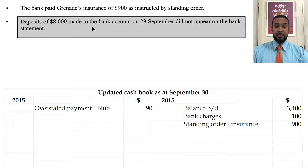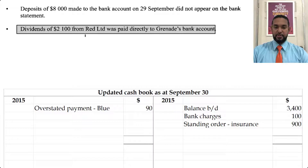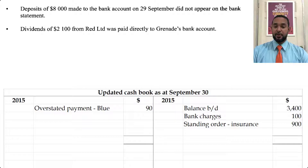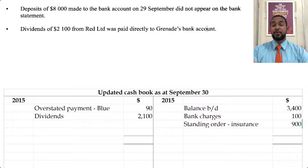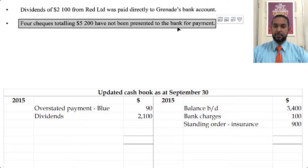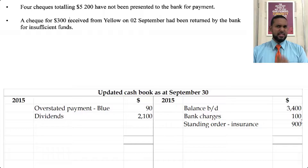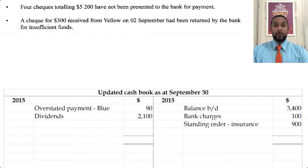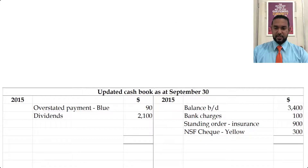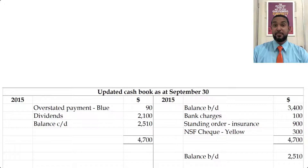The deposits did not appear on the bank statement, so that goes in the bank rec. Dividends of 2,100 from Red paid directly into the account would increase our bank balance — bank is an asset, so to record an increase you debit the asset account. The four unpresented checks go in the bank rec. The NSF check goes on the credit side: it was initially received and debited, but when the bank returned it we didn't actually get the money, so we undo the receipt by crediting. The balance is carried down — we still have an overdraft of 2,510.